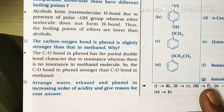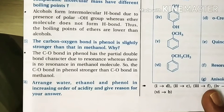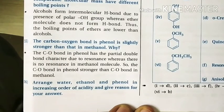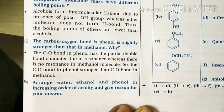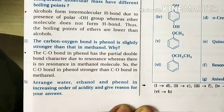Question 56: Arrange water, ethanol, and phenol in increasing order of acidity. Due to the positive inductive effect of the ethyl group, electron density in the OH bond of ethanol is higher than in water, so water is a stronger acid than ethanol. Due to greater stabilization of the phenoxide ion, phenol is a stronger acid than water. Therefore, the increasing order of acidity is: ethanol < water < phenol.